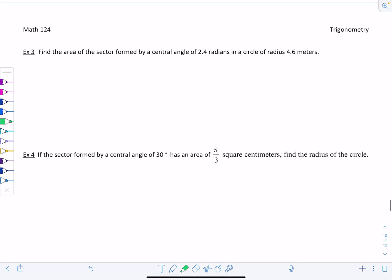Example 3. Find the area of the sector formed by a central angle of 2.4 radians in a circle of radius 4.6 meters. 2.4, that's theta. 4.6 is the radius. We're going to use the formula A equals one-half r squared theta. Plugging everything in, we have one-half times 4.6 squared. Theta is already in radians. Great.